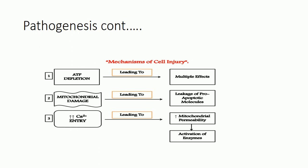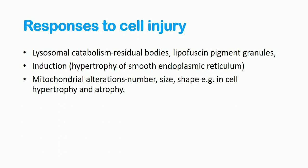In response to cell injury, a cell can undergo lysosomal catabolism, meaning there will be destruction of lysosomal bodies and also pigmented granules. Another response is induction. As seen in reversible cell injury, one manifestation is hypertrophy of the smooth endoplasmic reticulum, which occurs after cell injury. Another response involves mitochondrial alterations - mitochondria can be altered in number, size, or shape, for example in cases of cell hypertrophy and atrophy.